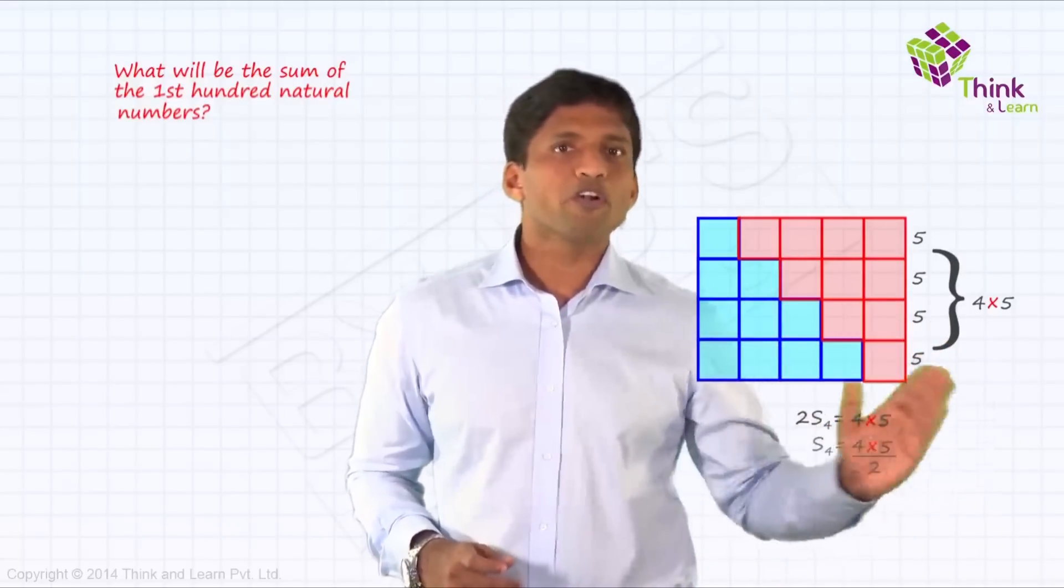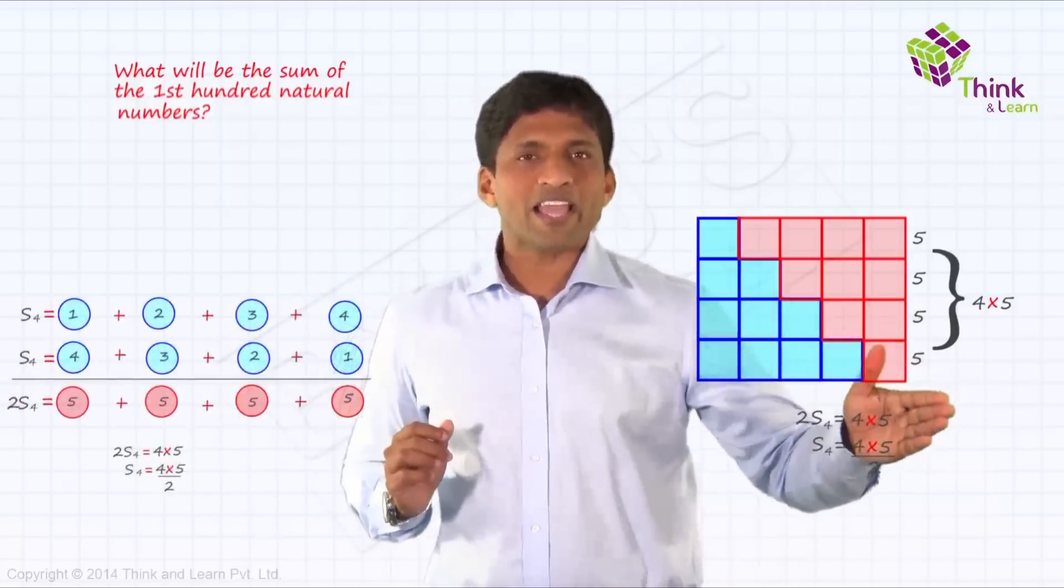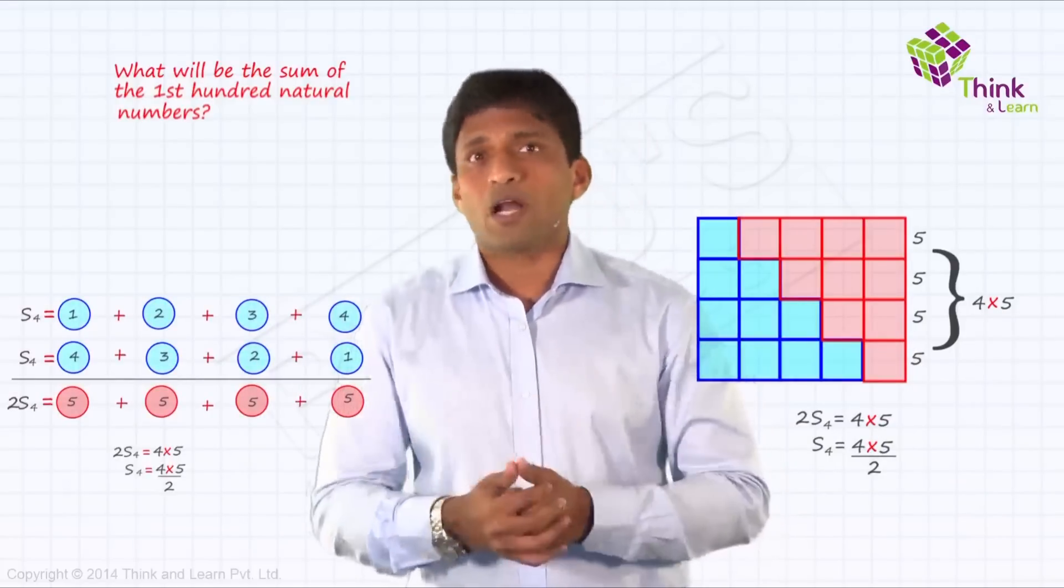So S4 will be 4 into 5 by 2. So what I did here using numbers, I am just showing it in a diagram so that even if you want, you can't forget it now, it's that simple now, right?